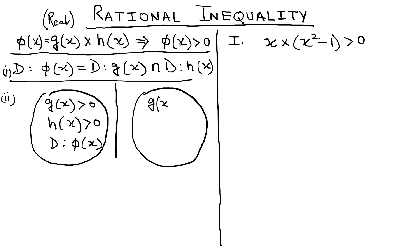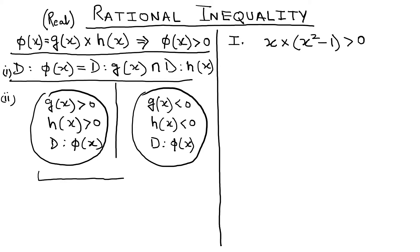The second case is when g(x) is negative and h(x) is also negative, intersected with the domain of φ(x). This gives solution set S2. Since we have formed two cases, the final solution is the union of S1 and S2.